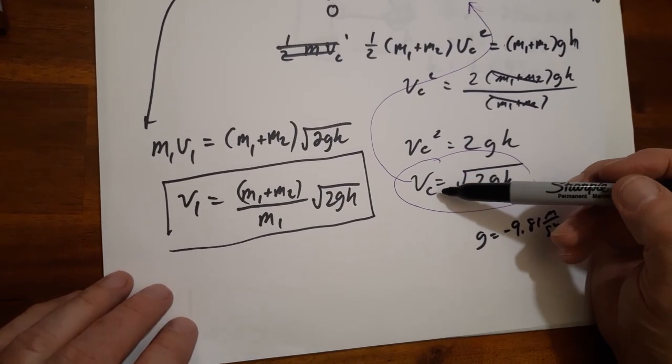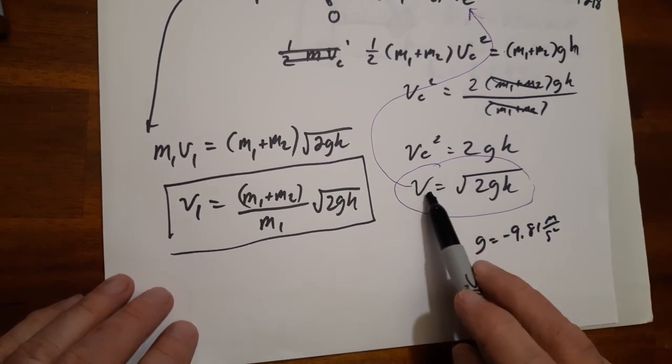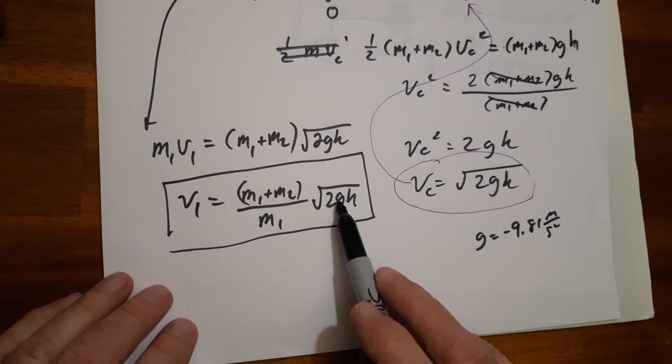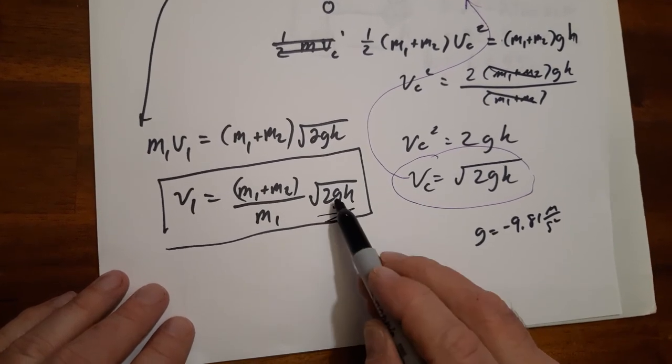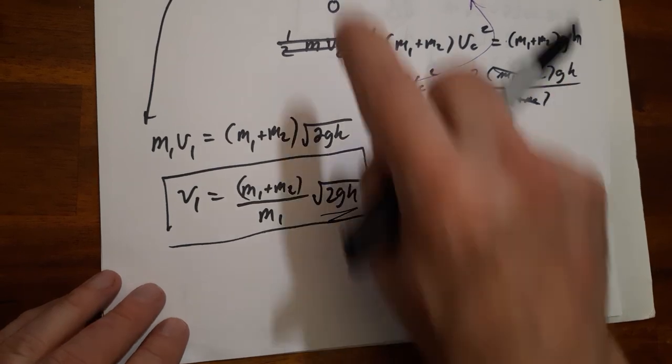Now that we have the velocity due to the collision, which is basically this guy here, we have the masses. We can find what the velocity is of the launch.